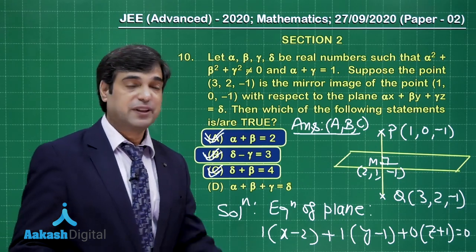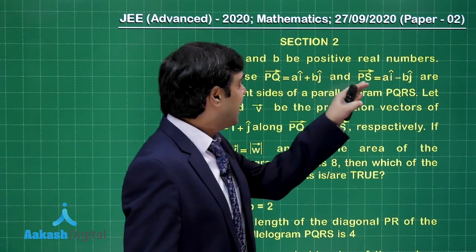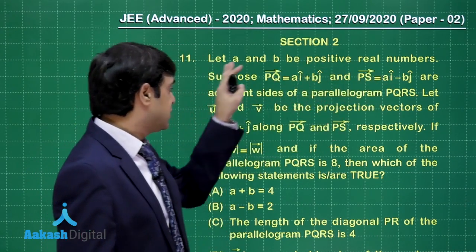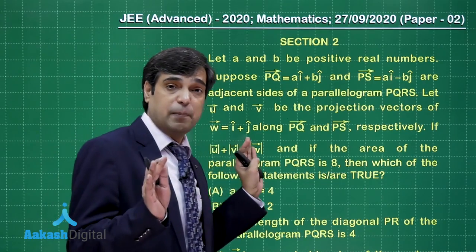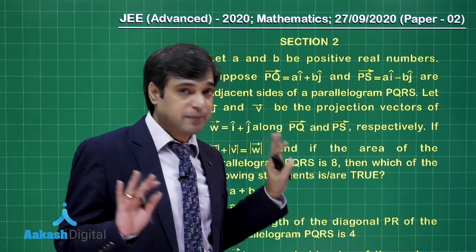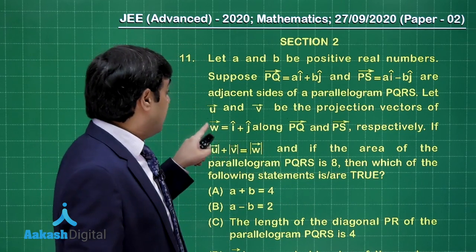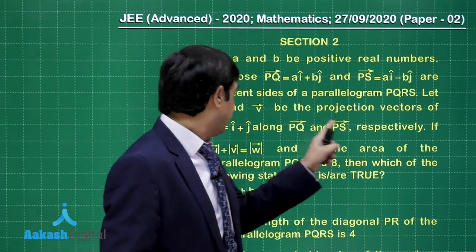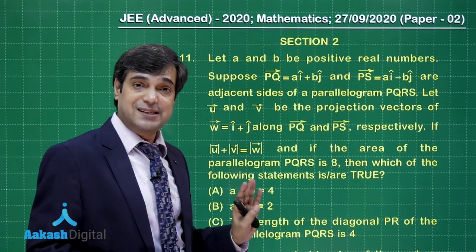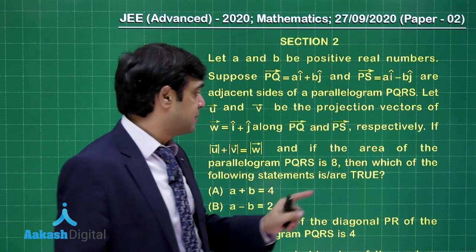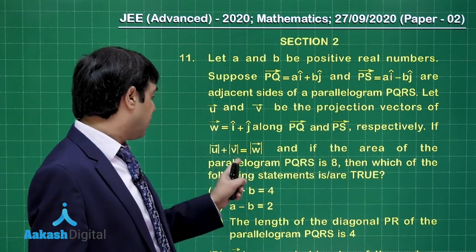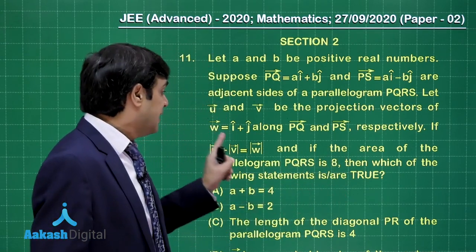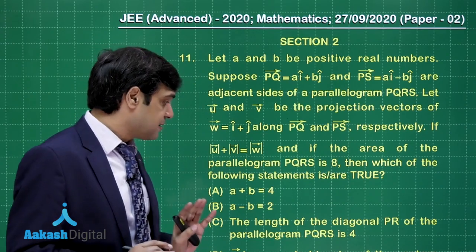Moving on to question number 11. Let A and B be positive real numbers. Suppose vector PQ and vector PS are the adjacent sides of parallelogram PQRS. Let U and V be the projection vectors of W along PQ and PS respectively. If |U| + |V| = |W| and the area of parallelogram PQRS is 8, then which of the following are true?